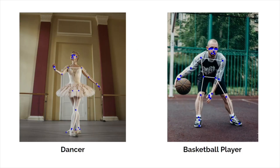As an example, if a person is a dancer, the face, palms and knees have higher priority than other joints. But for a basketball player, hands and toes are more relevant than the head.